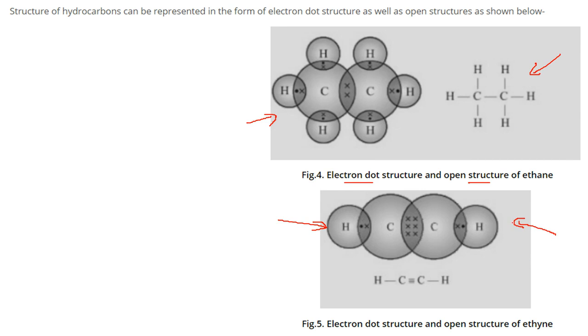In the electron dot structure, see this is carbon, so it has four valence electrons: one, two, three, and four. These are combined with hydrogen atoms. This carbon and that carbon are sharing electrons. Others are also sharing electrons. This kind of representation is electron dot structure. But if you show the bond by a line, these are known as open structures. This is the electron dot structure and open structure of ethane.